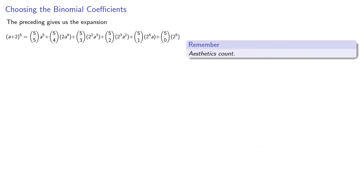So the preceding gives us the expansion. Now, in math and in life, aesthetics count. So while we could state our result that way, we prefer to count up.